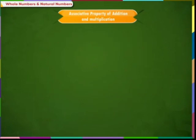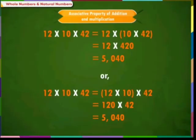Now let us discuss the associative property of multiplication. Take 3 whole numbers: 12, 10, and 42. In the first case we associate the last two numbers first, and in the second case we associate the first two numbers, that is 12 and 10. The product in both cases is the same. So here the associative property of multiplication is applicable.